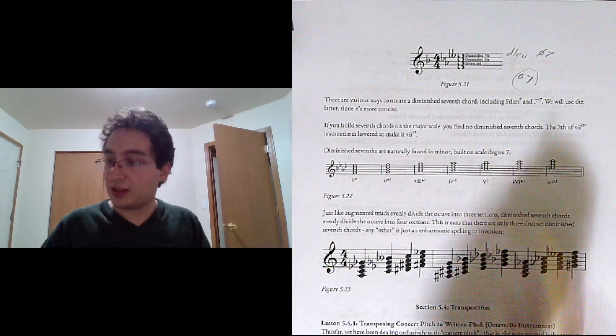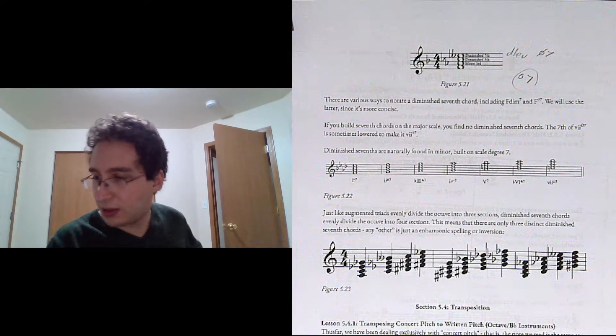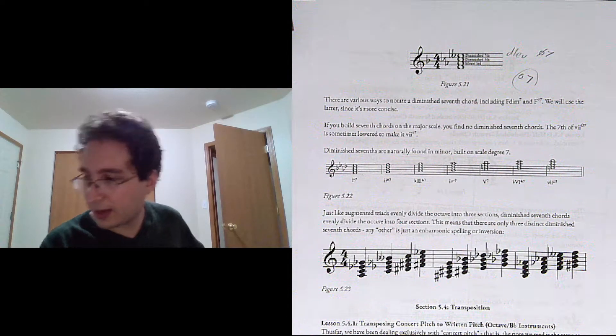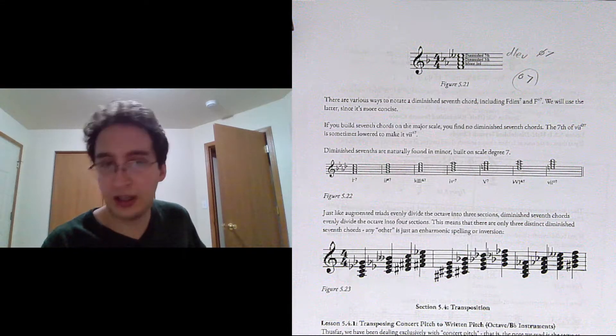Diminished 7ths are naturally found in minor, starting on scale degree 7. So you've got minor, half diminished, major, minor, dominant, major, and then fully diminished.